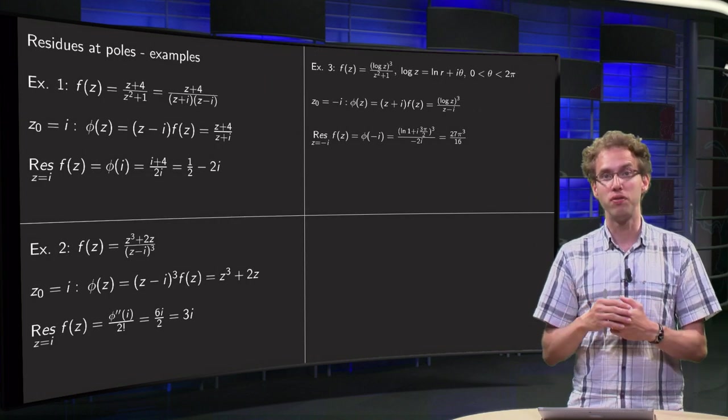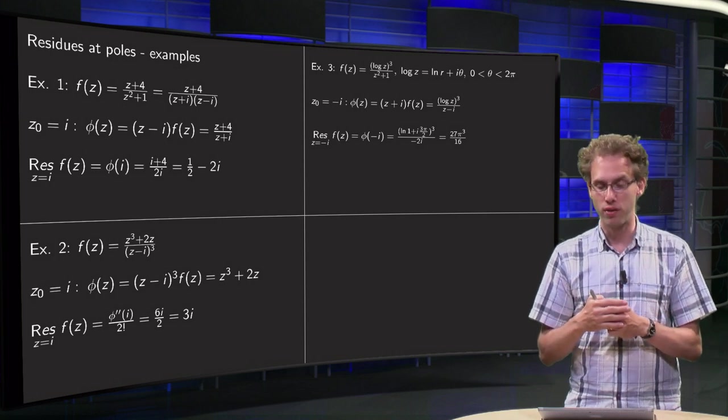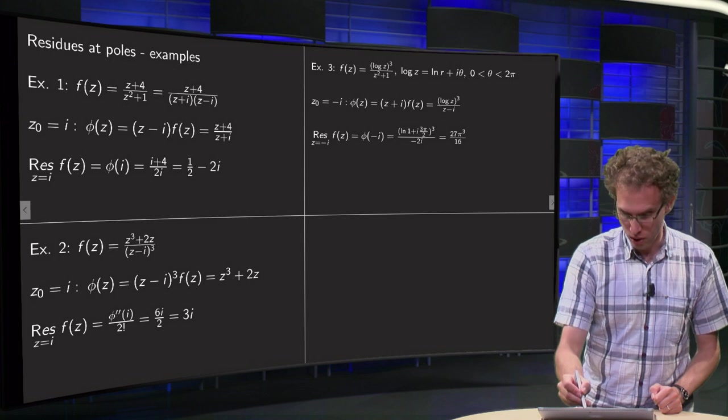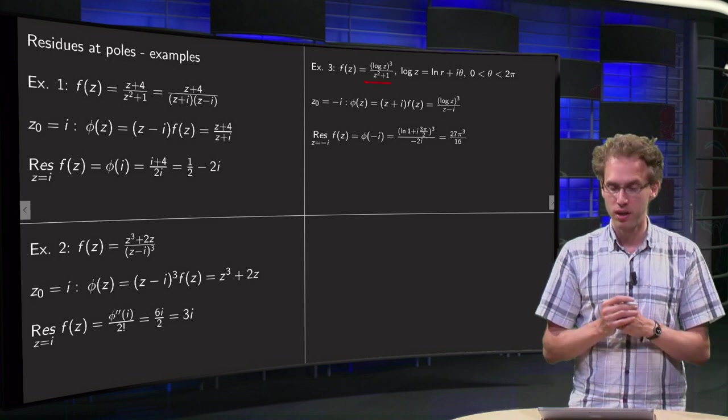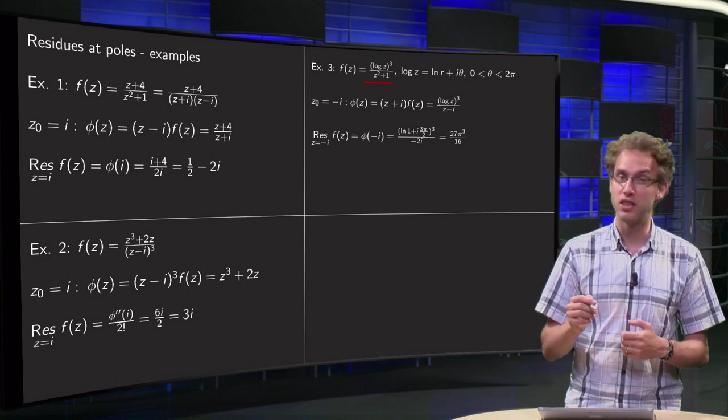Let us continue with a function which is a bit more complicated, which has a log. We have f of z equals the log of z cubed divided by z squared plus i. Then we have to define what our log of z is. We define it as follows.